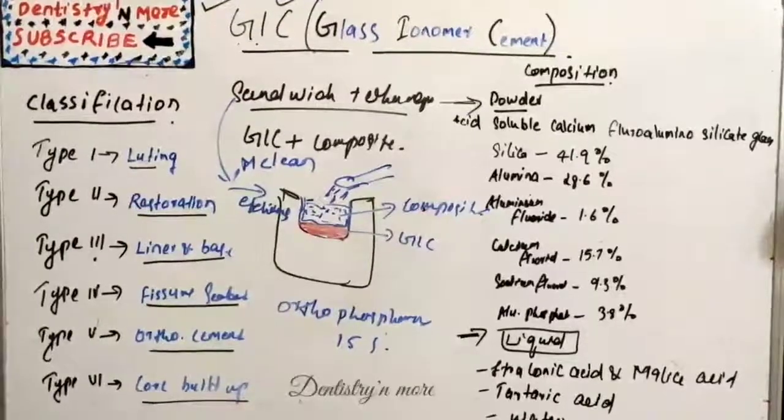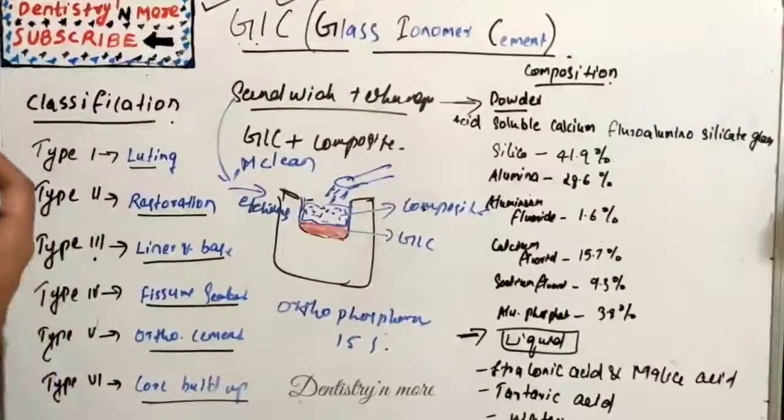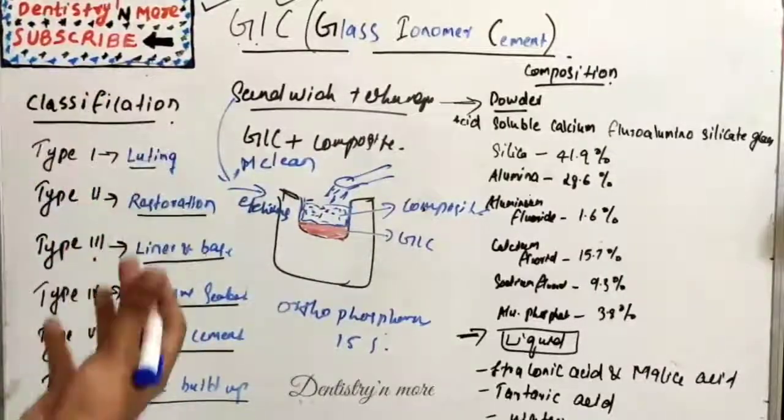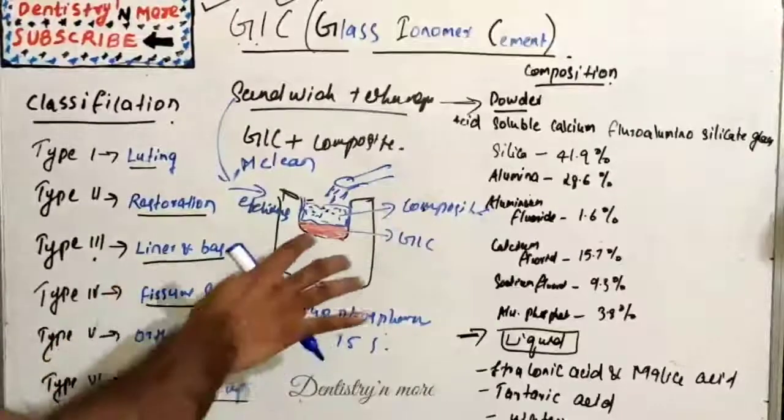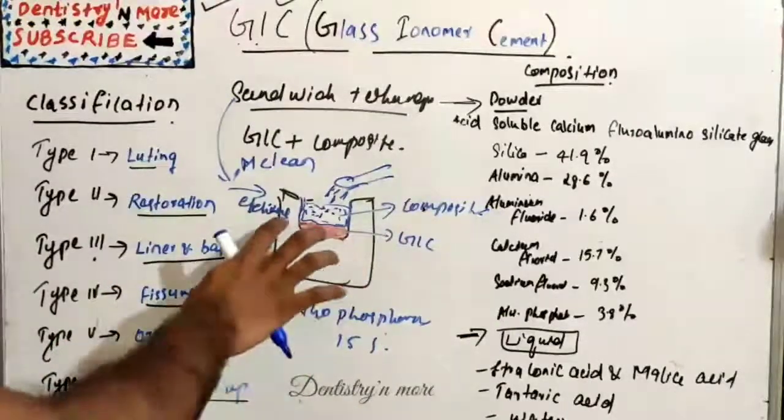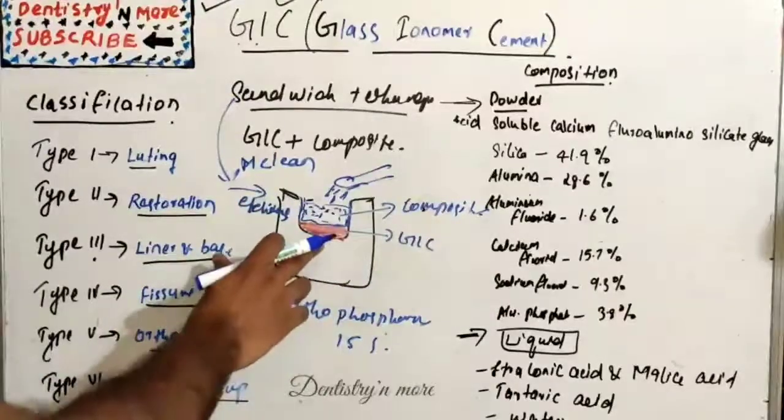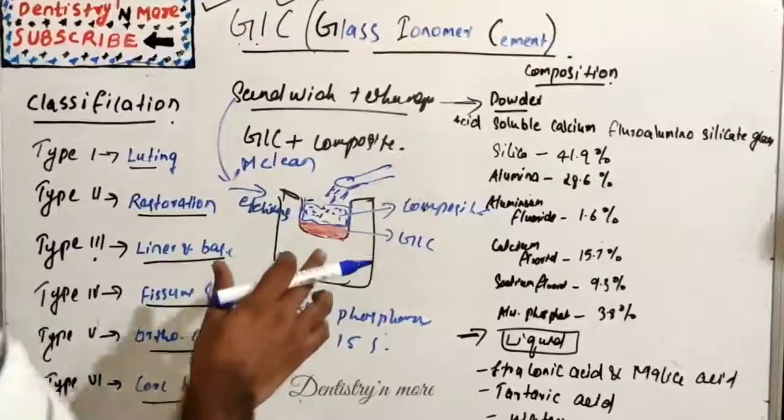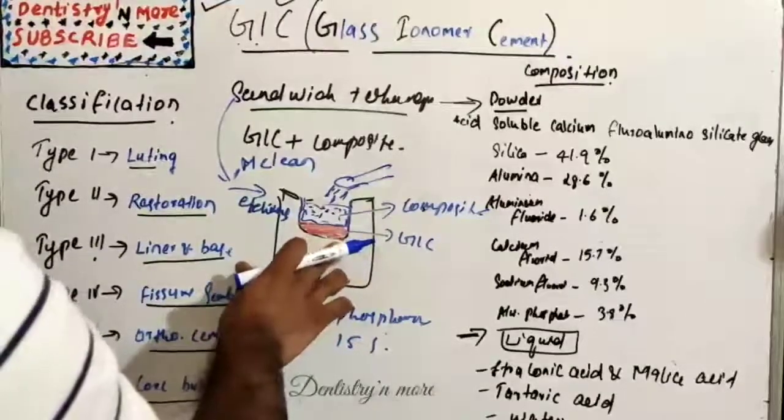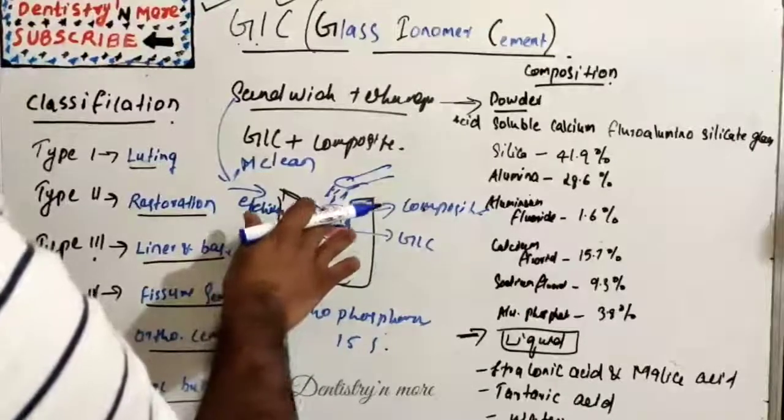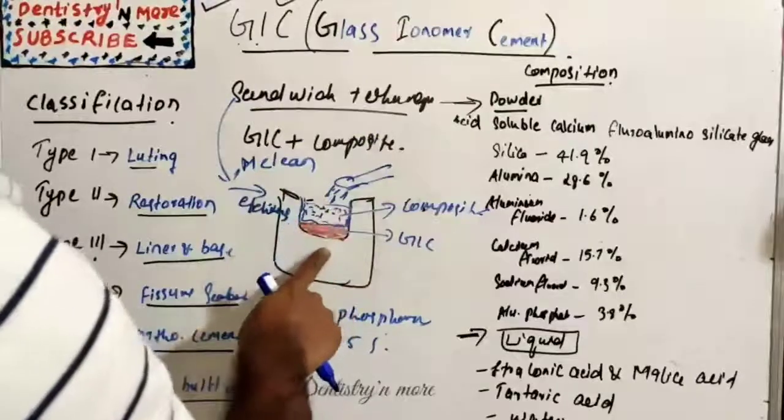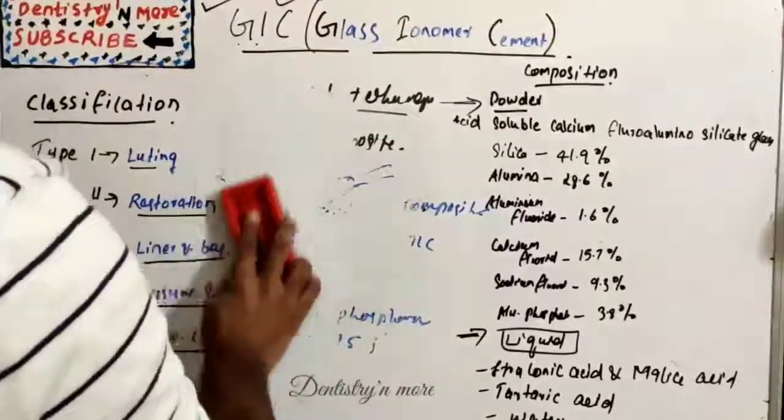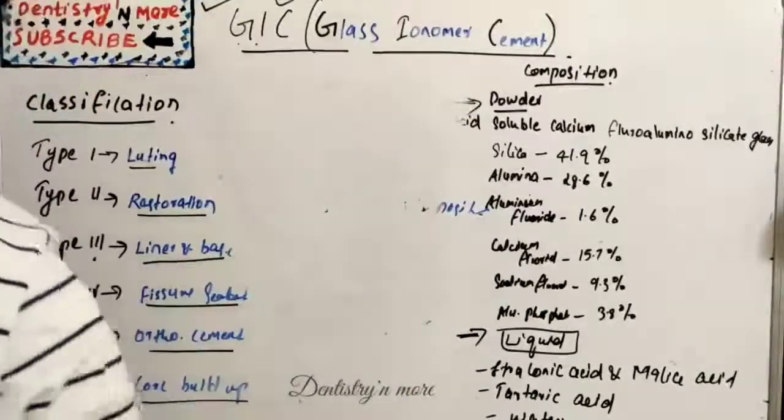The advantages of sandwich technique are: polymerization shrinkage is less due to the reduced bulk of composite, because we are not using completely composite. If it is completely composite there will be polymerization shrinkage. Favorable pulpal response because GIC is near to the pulp, chemical bond to the tooth, we have chemical bonding here, anti-cariogenic property with GIC, better strength, finishing, and aesthetics of overlaying composite. So we are keeping GIC towards the pulp for good pulpal response, and good aesthetics with respect to composite. On the occlusal side we have composite and towards the pulpal side we have GIC.